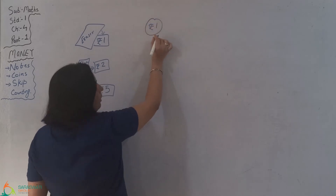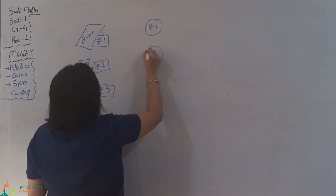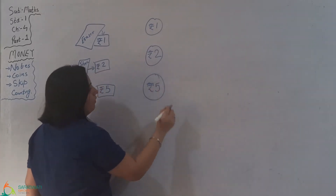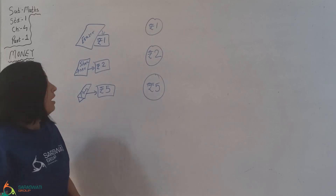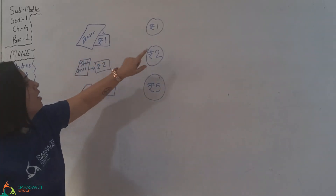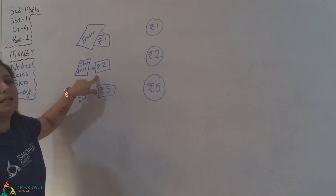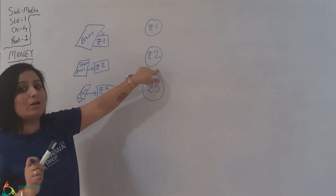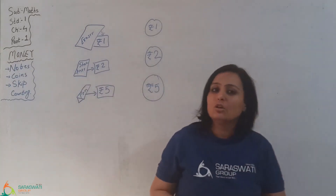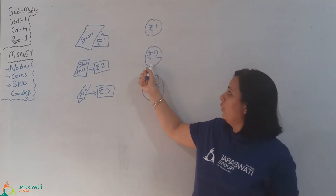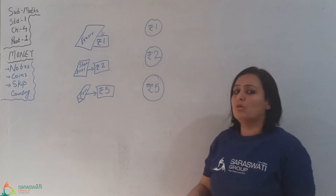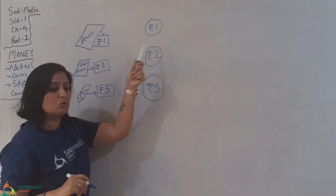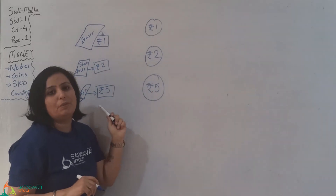Rupee 1 — this coin is 1. Then 2 rupees is 2 — this coin is 2. And 5. Now, 1 rupee has a coin, 2 rupees has a coin. When it has 5 rupees, it will give you a coin of 5. In the book — which is the coin? Which is the coin?